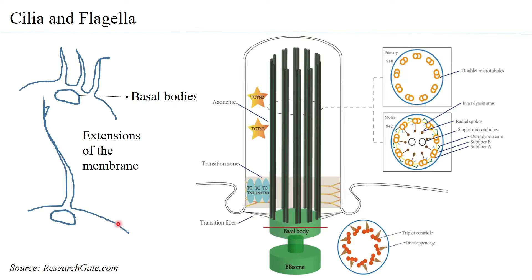From the basal body the entire cilia or flagella is formed. A cross section of the basal body shows a pinwheel-like structure: three microtubules — A, B, and C — form one triplet set, and nine such triplet sets form the pinwheel. This is the 9 plus 0 arrangement; the zero indicates no microtubules at the center. This arrangement is typical of microtubule organizing centers such as centrosomes and basal bodies.